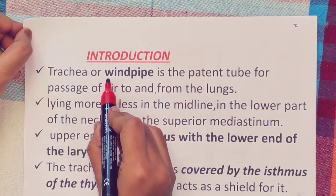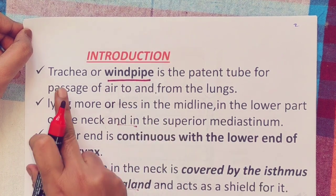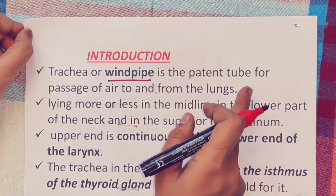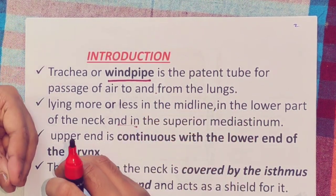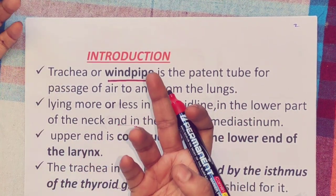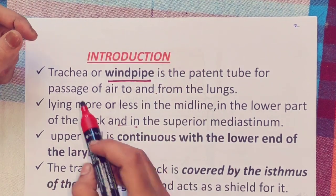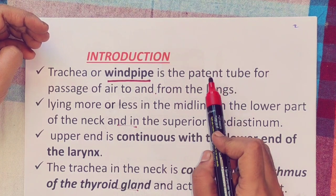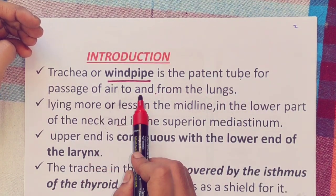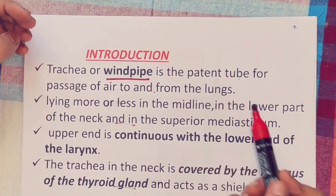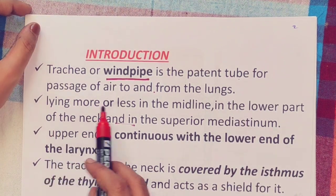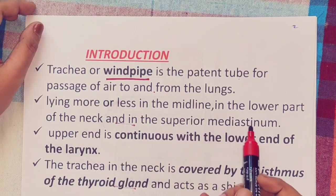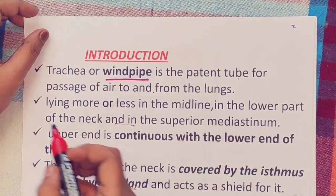Coming to the introduction of the trachea: the trachea is also known as the windpipe. It is a patent tube for the passage of air to and from the lungs. It lies more or less in the midline, in the lower part of the neck and in the superior mediastinum.